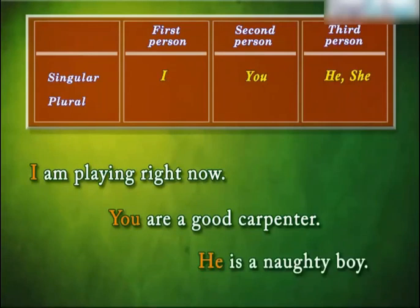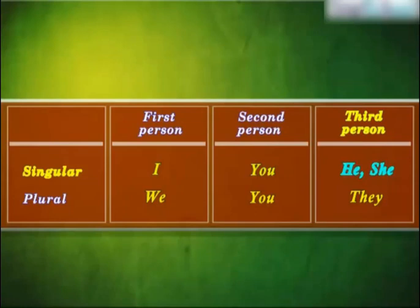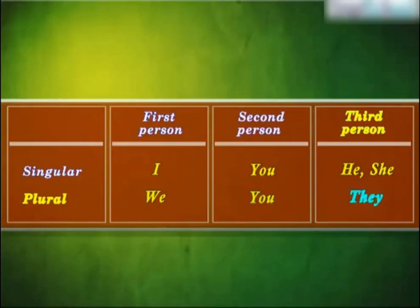Let us summarize this with a table. In the singular form: first person is 'I', second person is 'you', and third person is 'he' or 'she'. In the plural form: first person is 'we', second person is 'you', and third person is 'they'. From an examination point of view, this table is very important, so it is advisable to learn it.